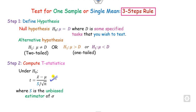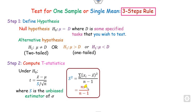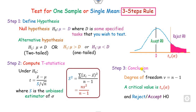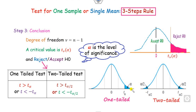Step two: compute the t-statistic using the formula, where capital S is the unbiased estimator of sigma. Step three: compute the degree of freedom. For a one-tail test, find the critical value from the t-table based on the degree of freedom. Locate your computed t-value; if it lies in the shaded (rejection) region — greater than the critical value for one-tail, or in the shaded portion for two-tail — then H0 is rejected. Alpha is called the level of significance.